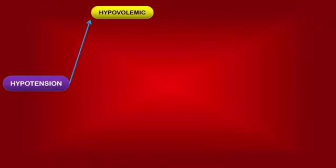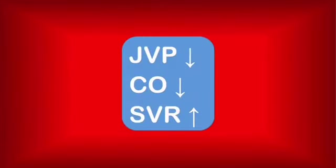First off, if the patient is losing fluids — acutely or in a chronic manner — the intravascular volume will naturally decrease, leading to a reduction in hydrostatic pressure in the vessels. This hypovolemia will lead to dehydration and will decrease the amount of blood the heart can pump, thus decreasing blood pressure. The body will react and increase the systemic vascular resistance in an attempt to shunt blood to essential organs. As a result, the jugular venous pressure is reduced, the cardiac output is initially decreased until the baroreceptor reflex kicks in, and the systemic vascular resistance is increased because of compensation.